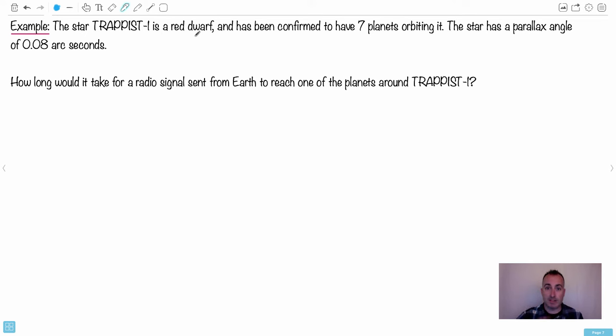So this is one famous one, at least at the time that I record these, called TRAPPIST-1. Now we know it's a red dwarf which means a tiny little red star. That means it could be really old. It'll last kind of forever. But it has seven planets already orbiting it. So we've already detected seven at the time that I record this. Now the star has a parallax angle of 0.08 arc seconds. So the question is how long would it take for radio signals sent from earth to reach one of the planets?